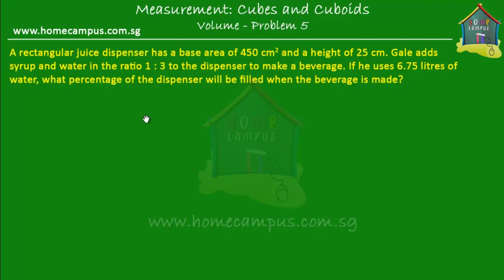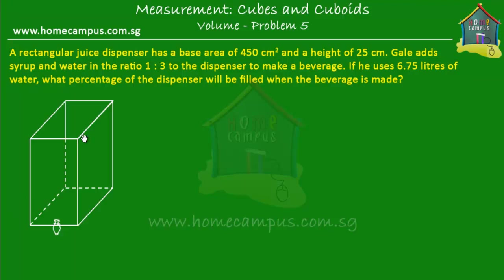It's quite a mouthful but it's really not difficult at all. We have a rectangular juice dispenser, and Gale is adding syrup and water in the ratio 1 to 3 — which means 1 part of syrup to 3 parts of water. Now if he uses 6.75 litres of water, we have to find out what percentage of this dispenser will be filled when the beverage is made.